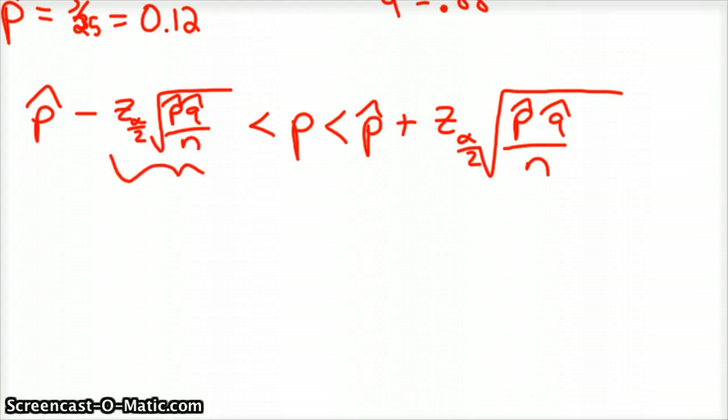And so this is your maximum error in the sample proportion. So we go ahead and throw in the numbers now. So P hat was 0.12 minus, okay, so we need this 90% confidence interval for our Z score.